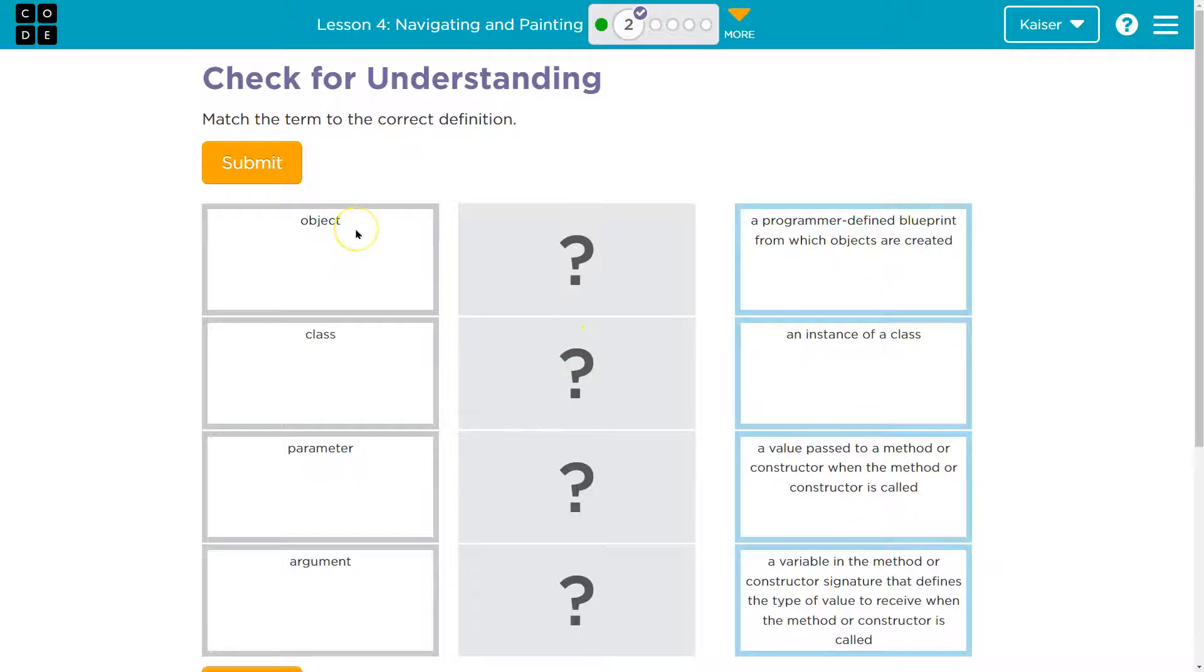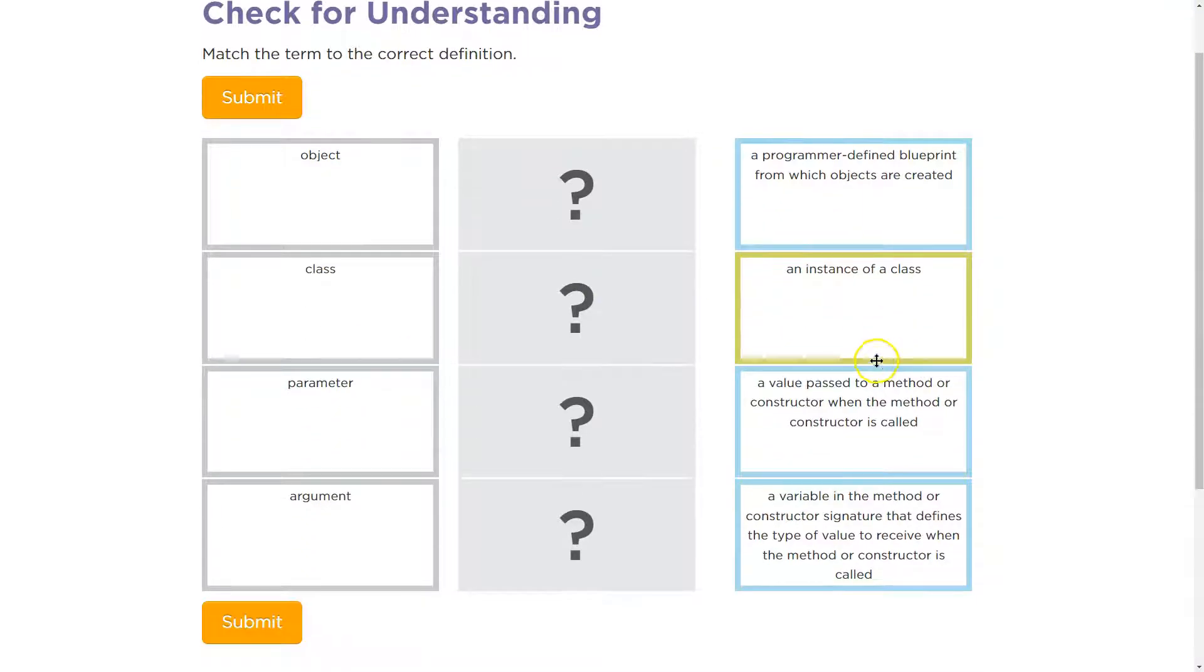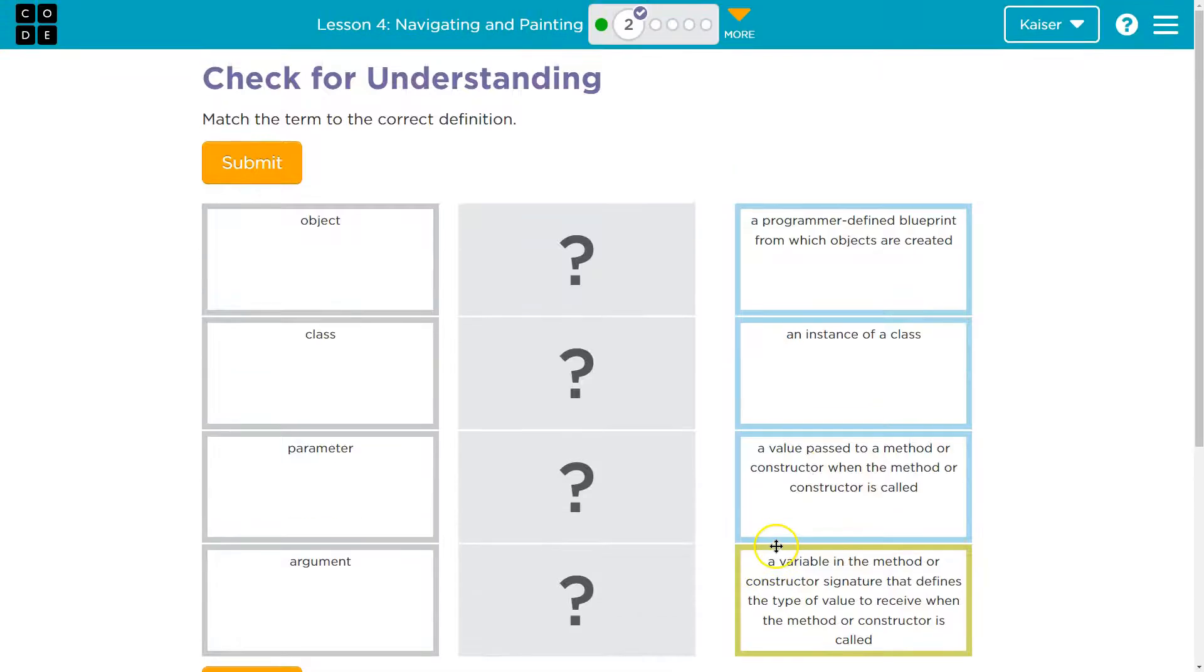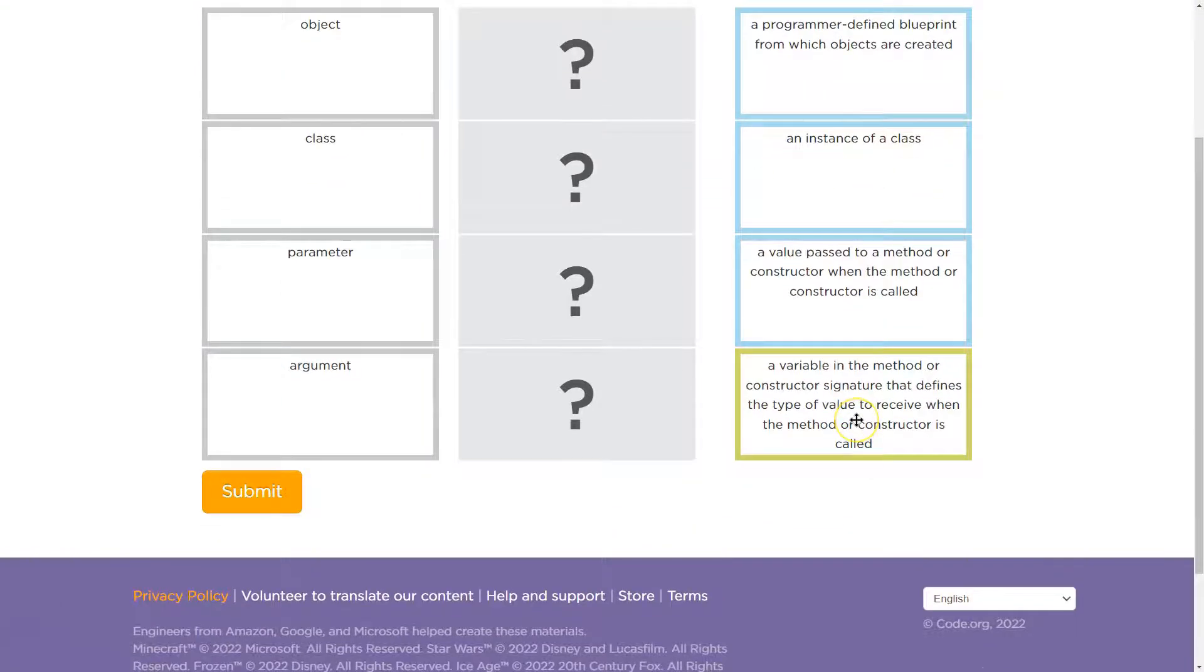So, let's take a look. An object, class, so I see an instance of a class. I'm going to guess that's not what a class is, right, because that value is used. So, you really want to take a guess at these. Let's see. A program-defined blueprint from which objects are created, interesting, value passed to a method or constructor when the method constructor is called, variable in a method.